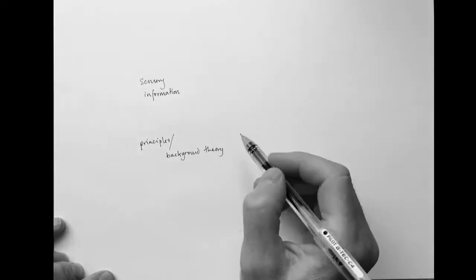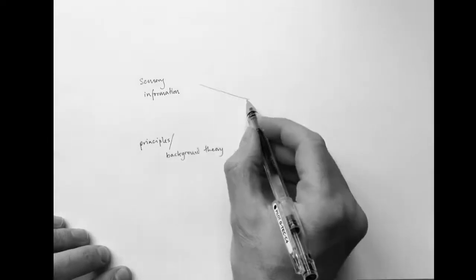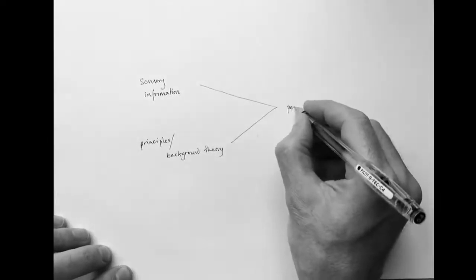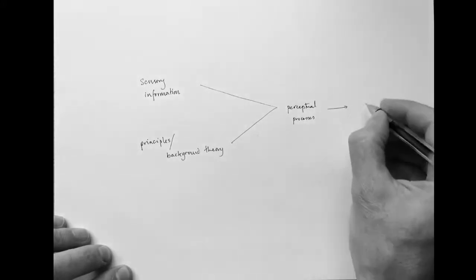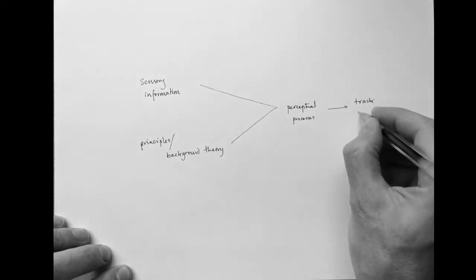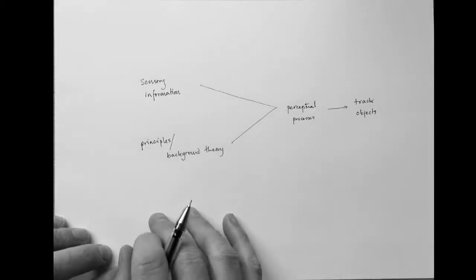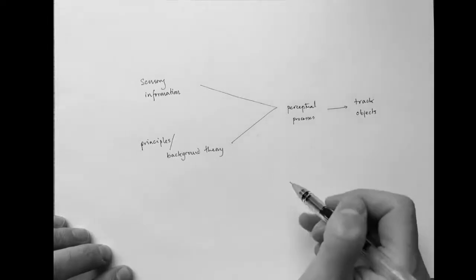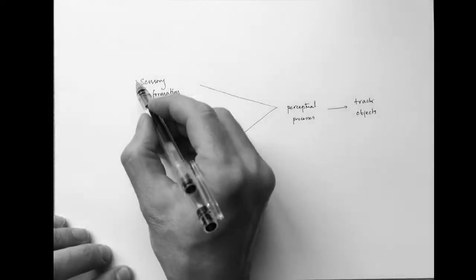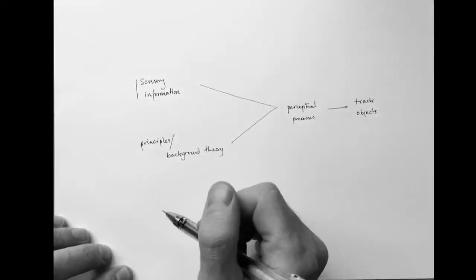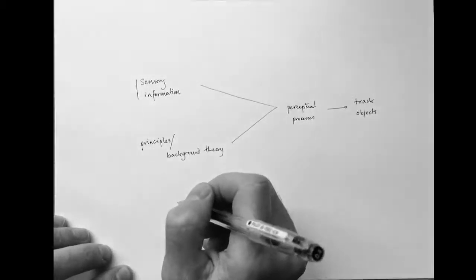No. The perceptual processes also rely on some principles governing the way the objects behave, or if you like, a background theory. The theory will include things like objects move on spatiotemporally continuous pathways. So those will be both inputs to the perceptual processes, which then enable you to track objects. Now, this is a lovely, very simple picture. The important point to gather here is that perceptual processes can't rely entirely on sensory information, because that information is often fragmentary, as where an object disappears from view temporarily because something is in front of it.